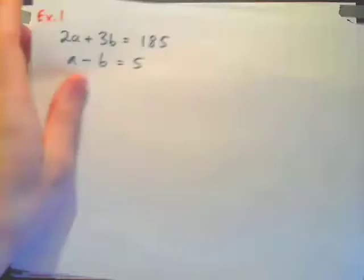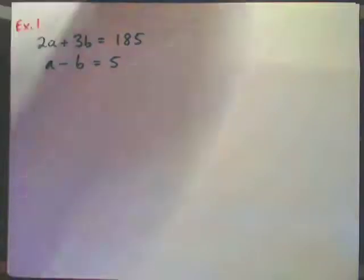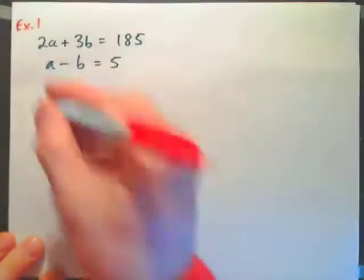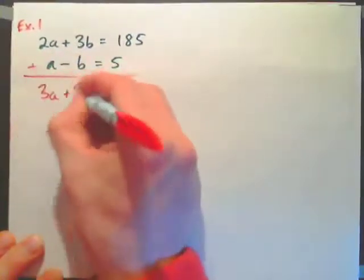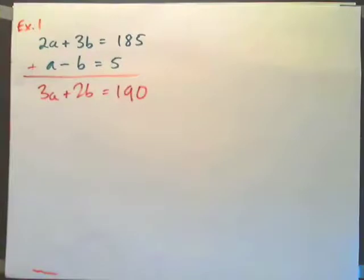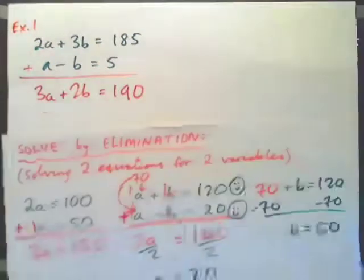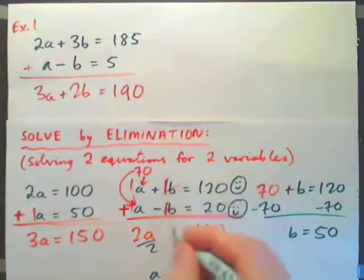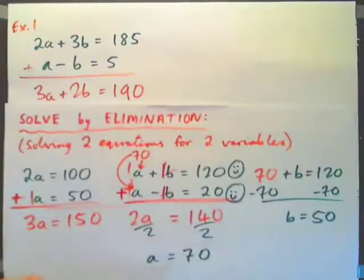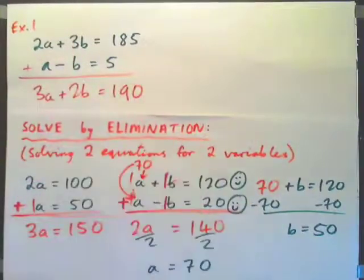In example 1, two apples plus three bananas costs 185 cents, and apple minus banana costs 5 cents. Our new trick is adding the equations together. If we add them, we get three apples plus two bananas costs 190 cents. But hold on — does that help? In the last example, one banana minus one banana made zero, but here nothing eliminated, so adding directly didn't help.